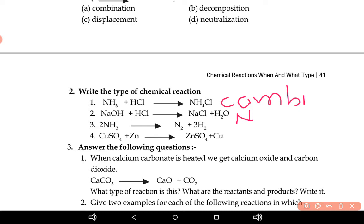And 2NH3 gives us N2 plus 3H2. This is decomposition reaction. I am writing here D for decomposition and N for neutralization. And this is combination reaction. And last one is Zn plus CuSO4 gives ZnSO4 plus Cu. It is displacement reaction.